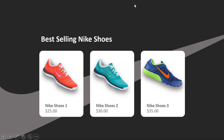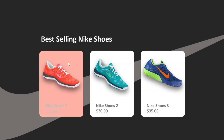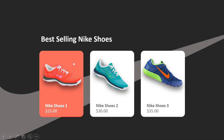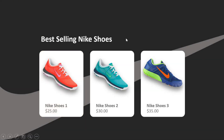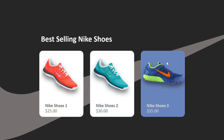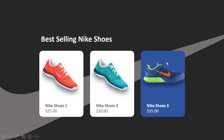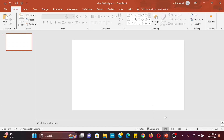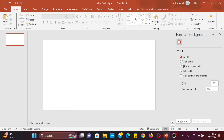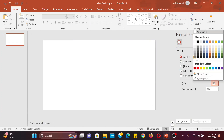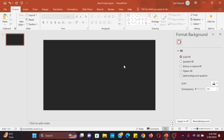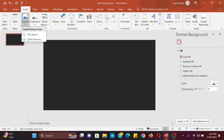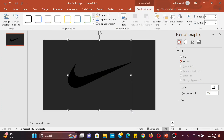Hello guys, welcome back with another beautiful tutorial. Today we see how to do products hover animation in PowerPoint. Right-click on mouse and choose format background, then change the color. Insert a Nike logo and change the size and position of the logo.